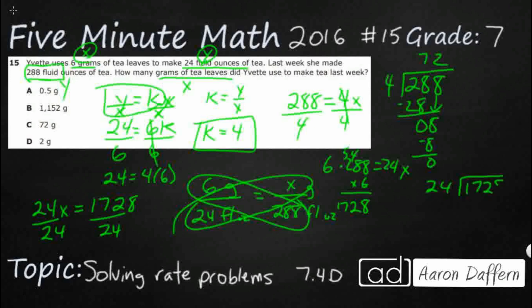So 1728. Let's say 24 goes in there 7 times. It's going to be 8. That's going to be 14, 168. 168. So that's going to leave us with 4, 8. 24 goes into 48 twice. And there we go. Same answer.